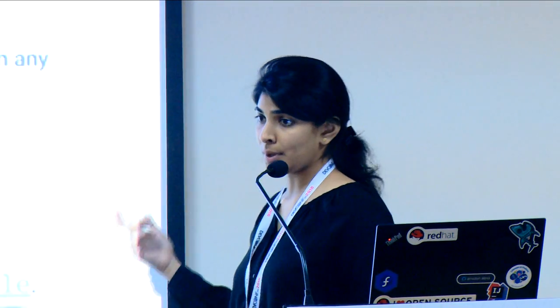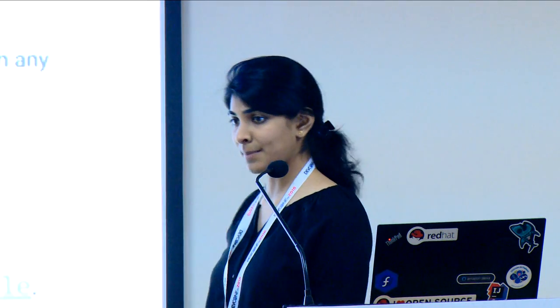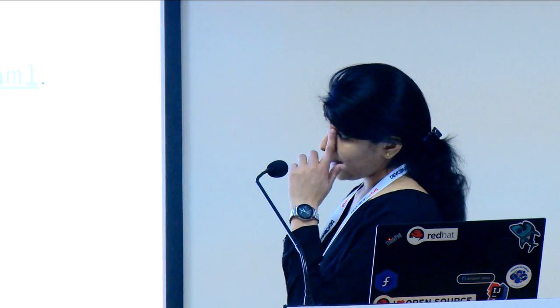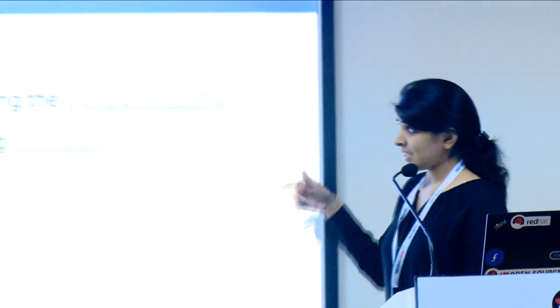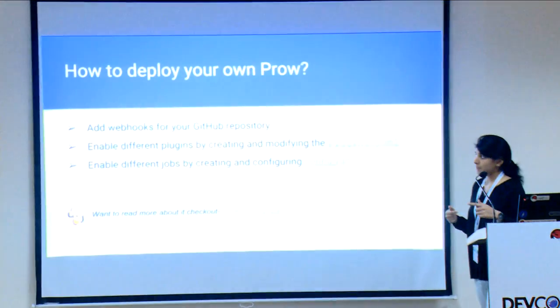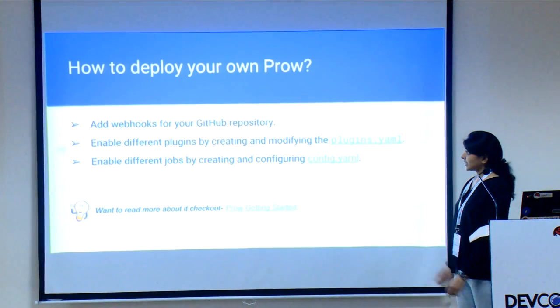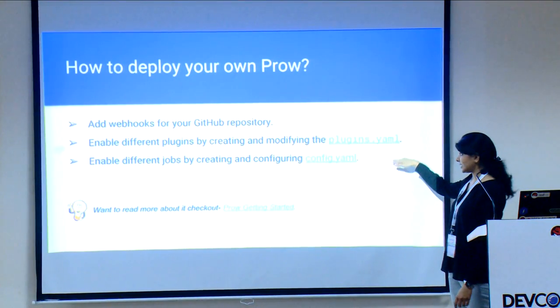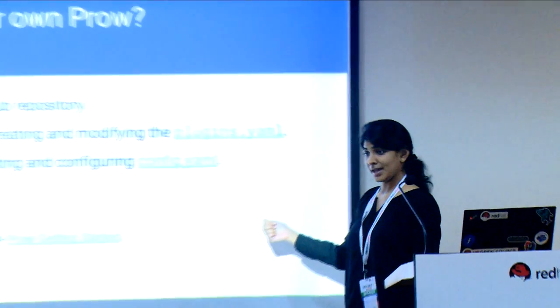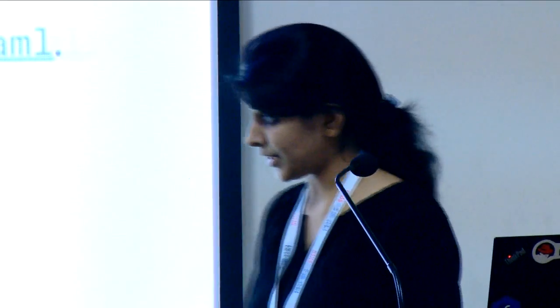There is a starter.yaml already available. If you do not want all the components — for example, if you do not want Tide or auto-merging — you can skip those. Otherwise you can use the complete configuration. Once that is done, you configure webhooks for your GitHub repository. Whichever plugins you want, you configure them by adding a plugins.yaml file to your repository. The different kinds of jobs you want are also configurable using a config.yaml file in your project.